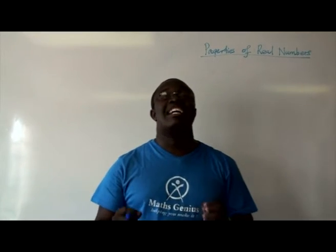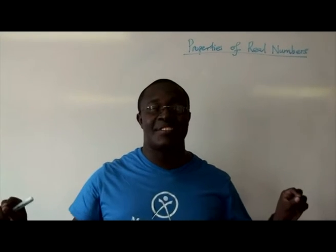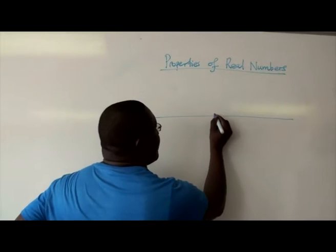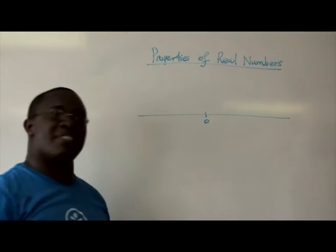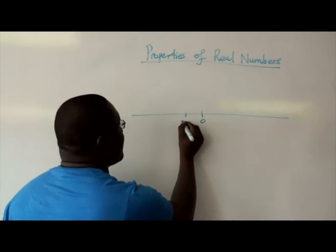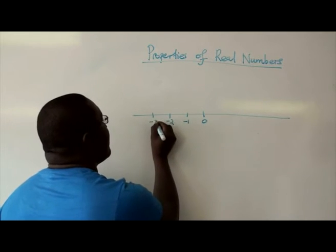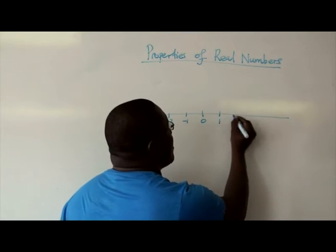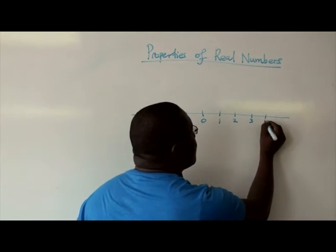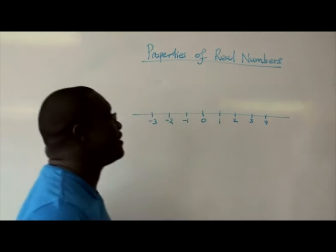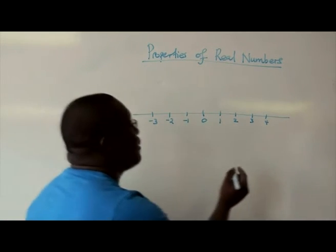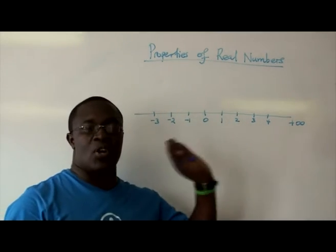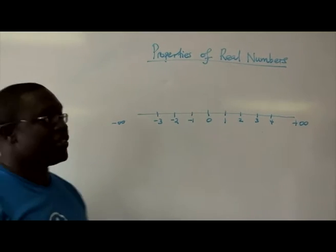Real numbers are all the numbers that exist on the number line. So if I was to draw a number line, the center of the number line is always zero and then you've got your negative numbers, negative one, negative two, negative three, up to negative infinity. Then here as well, one, two, three, four, up to infinity. So I'll just put my negative infinity there and my positive infinity there, meaning that it goes on and on forever.